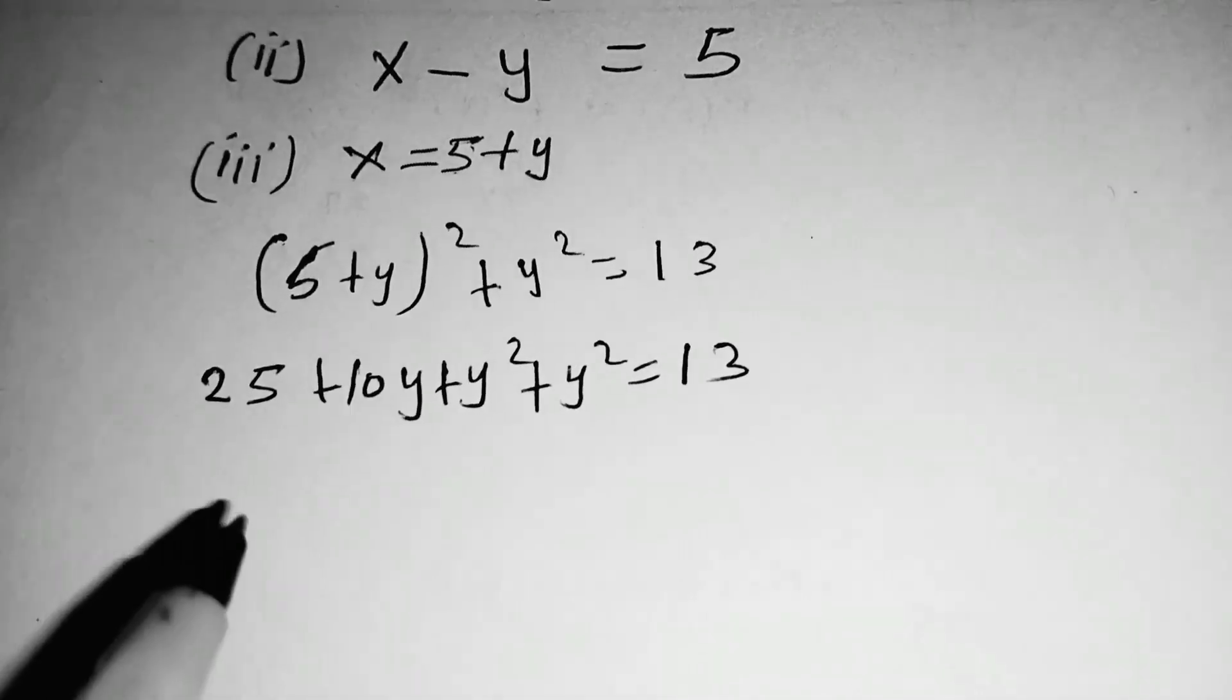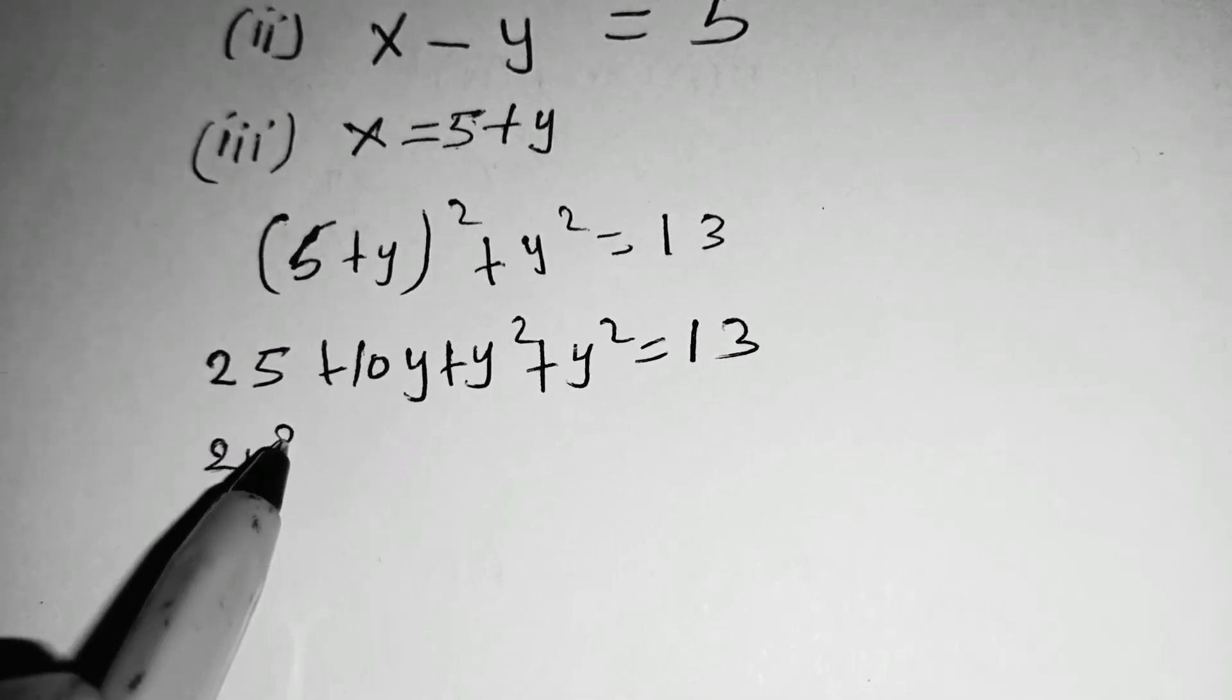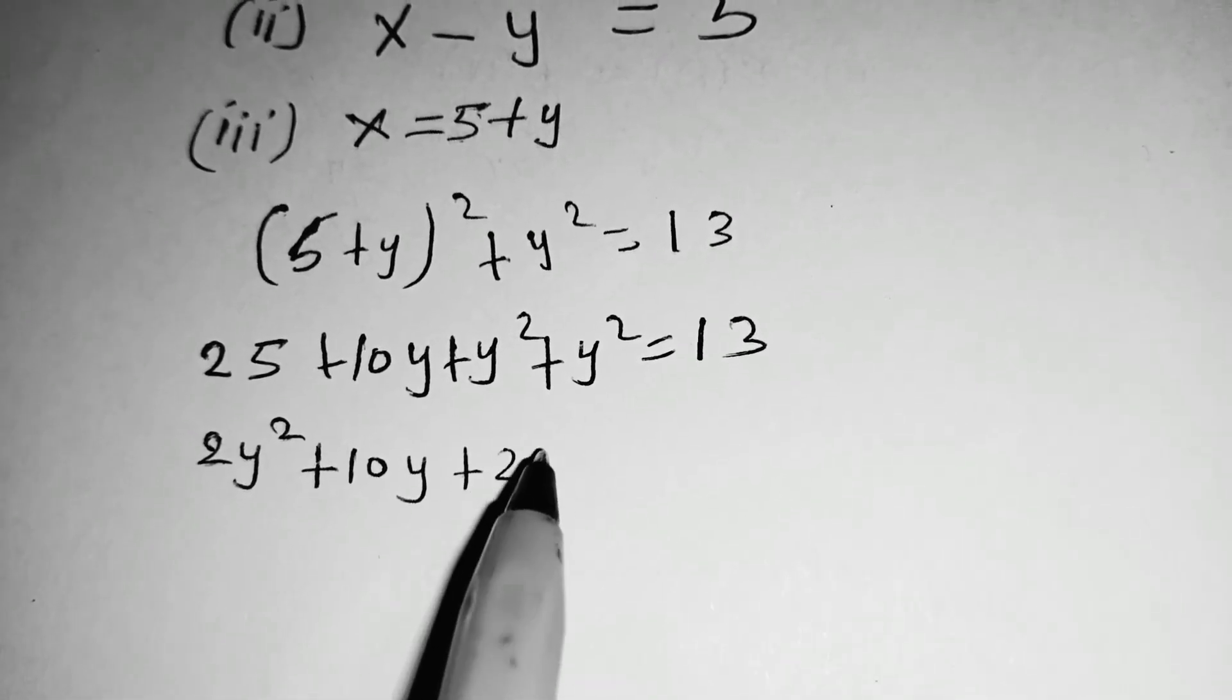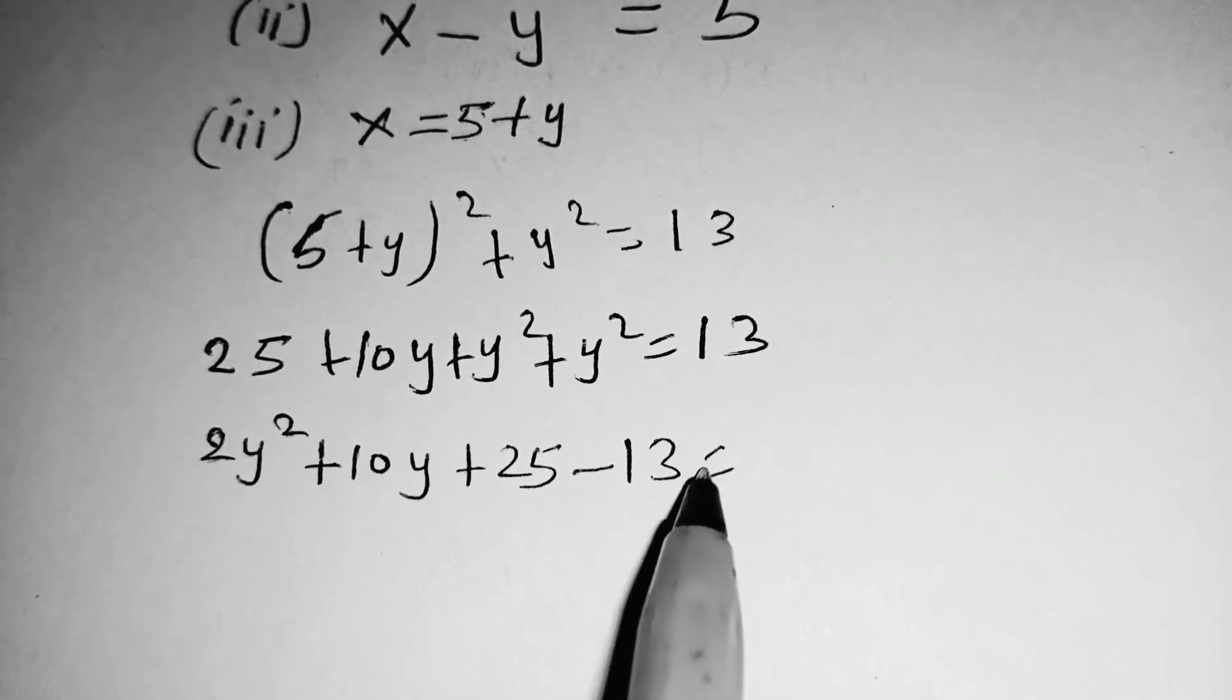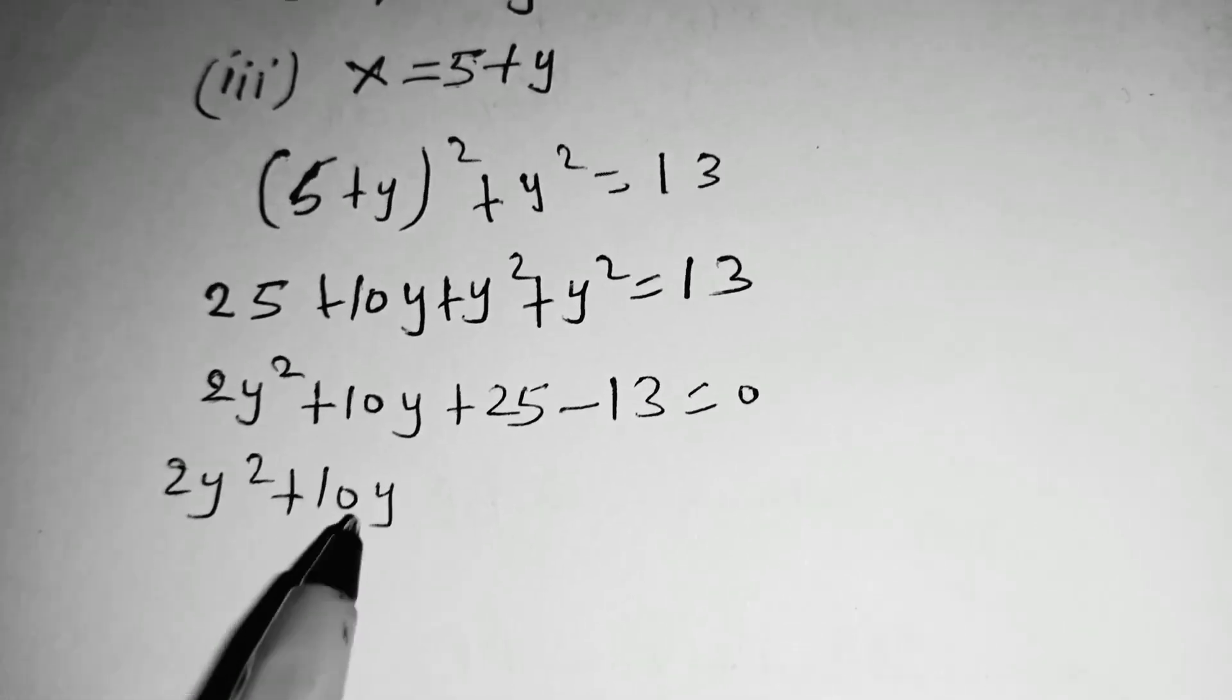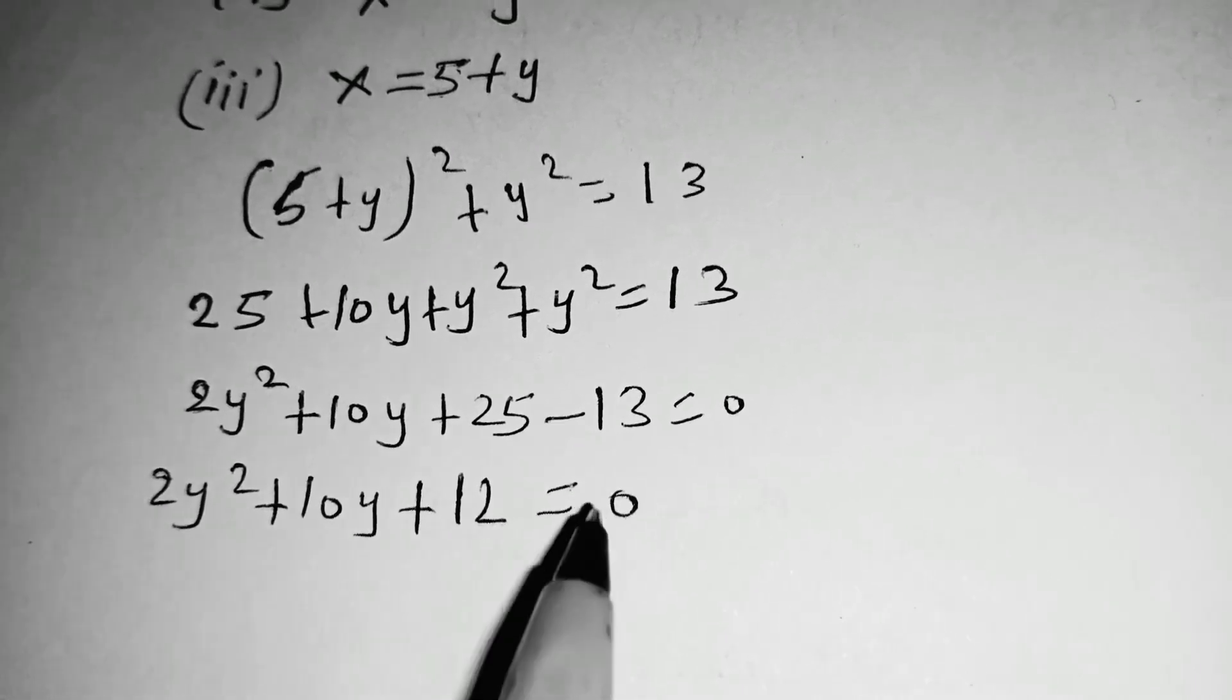We can take 13 to the other side, so 2y squared plus 10y plus 25 minus 13 is equal to 0. So you solve 2y squared plus 10y plus 12 is equal to 0.